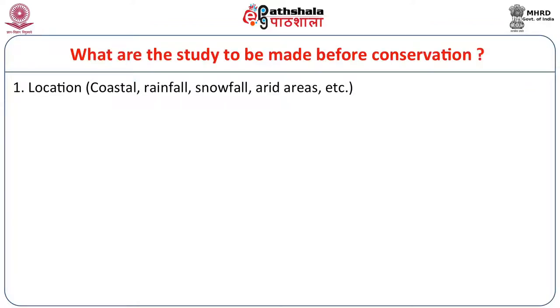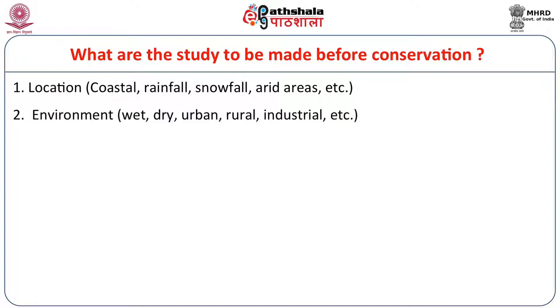Before taking up conservation, we have to make certain parameters through some studies. First, we have to study the location where the monument exists — whether it is a coastal area, rainfall area, snowfall area, or arid area — so that conservation goes according to the location. Second, the environment: the wet condition, dry condition, urban region, rural, or industrial area — conservation has to depend on the environment in which the monument is currently existing.